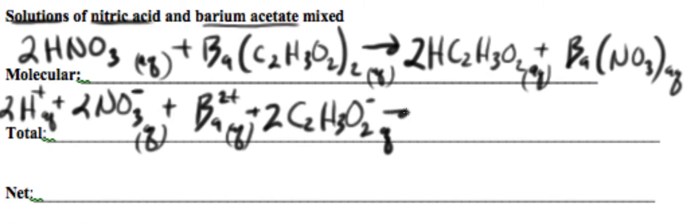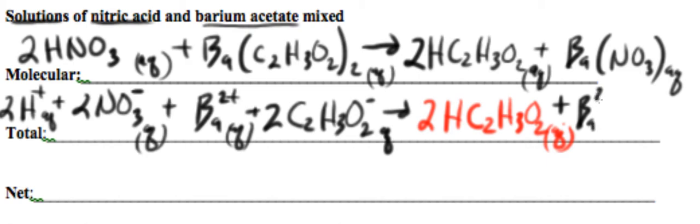Now the important part of this is acetic acid is a weak acid, so it stays as molecules. Does it dissolve? Yes, it dissolves—that's why it's aqueous—but it dissolves as molecules, so that's the important part. Barium is going to be dissolving as ions, and then we'll have two nitrate ions.